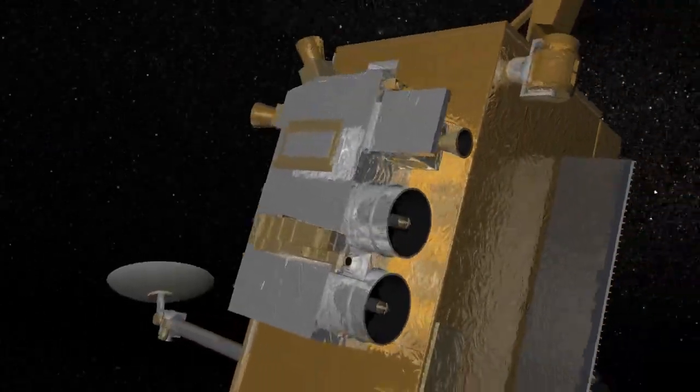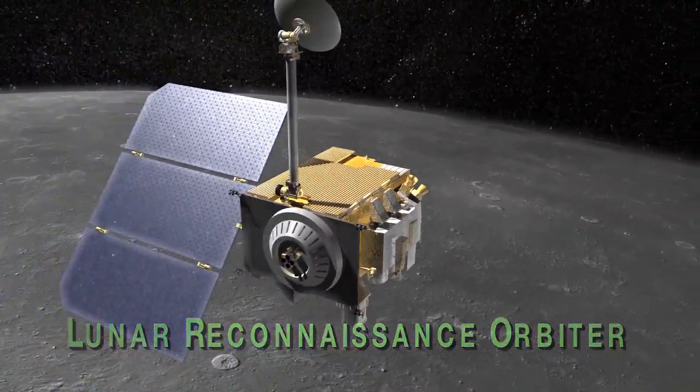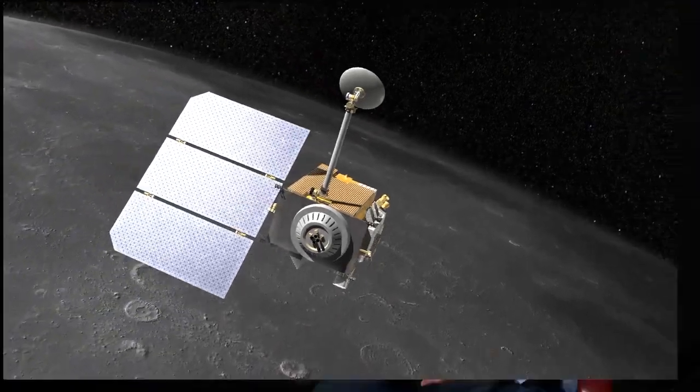For those that don't know, LRO is the Lunar Reconnaissance Orbiter. It's a NASA spacecraft that's been orbiting the moon since June of 2009, taking high-resolution pictures of the surface, measuring the precise topography of the lunar surface, thermophysical properties of the surface, the radiation environment, the abundance of hydrogen on the surface, basically creating a high-resolution 3D archive of the properties of the surface of the moon.